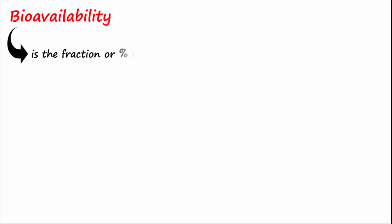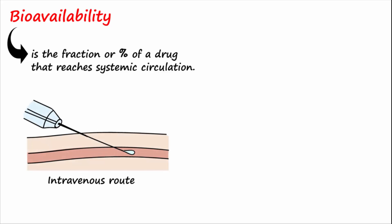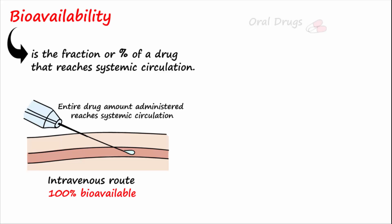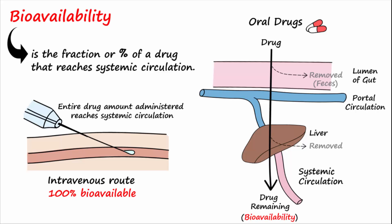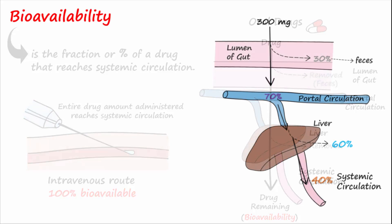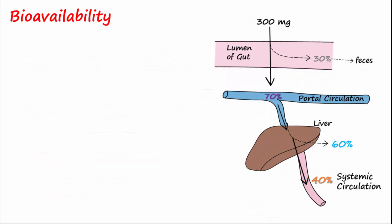Bioavailability is the fraction or percentage of a drug that reaches systemic circulation. Drugs administered by the intravenous route are 100% bioavailable because the entire amount administered makes it to systemic circulation. Oral drugs are not 100% bioavailable because some of the drug is not absorbed but is instead lost in the feces, and some of the drug is destroyed by the liver before it reaches general circulation.